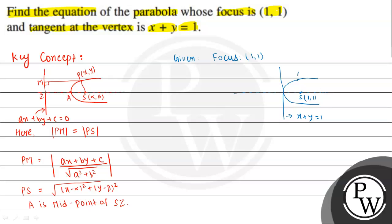P is a general point on the parabola with coordinates (x, y), and A is the vertex. We consider the directrix as a line whose equation we need to find. Z is the foot on the directrix, and M is the foot of the perpendicular from P to the directrix. We have PS equal to PM, but first we need to find the directrix.